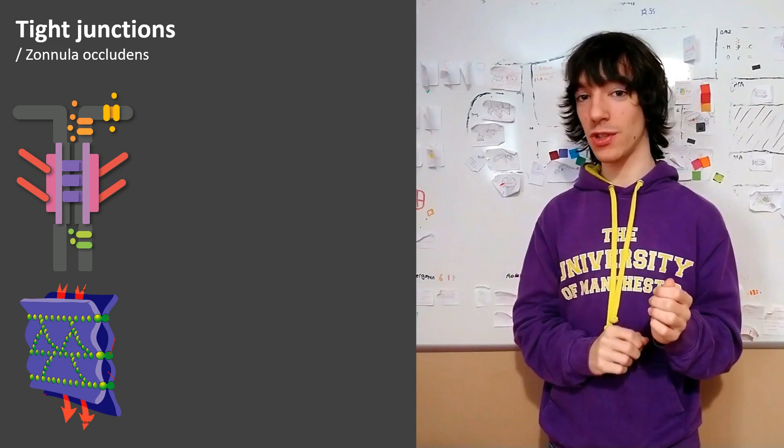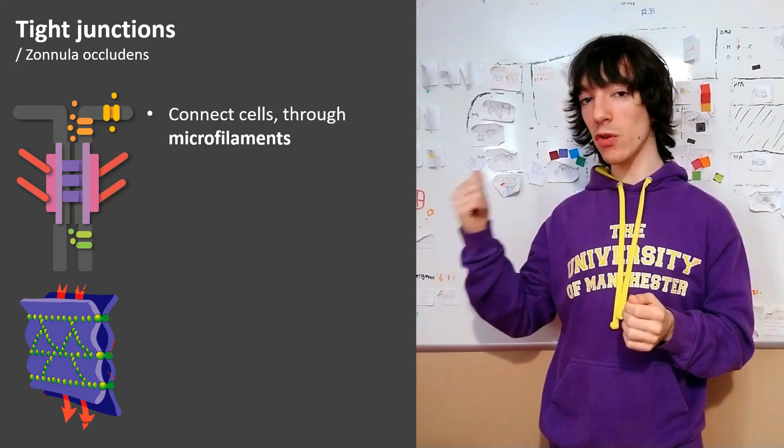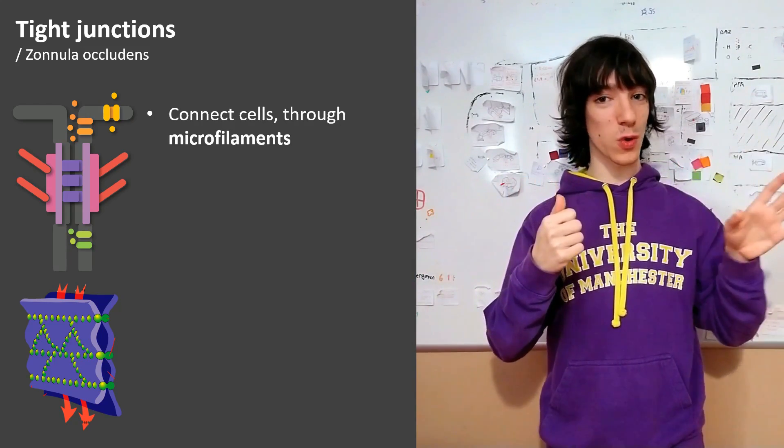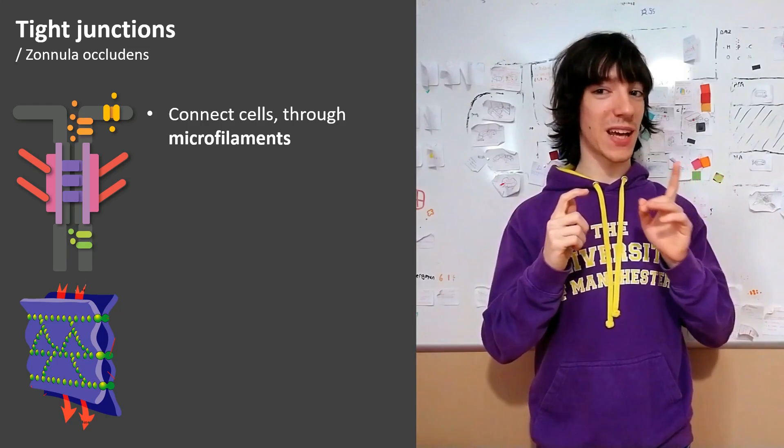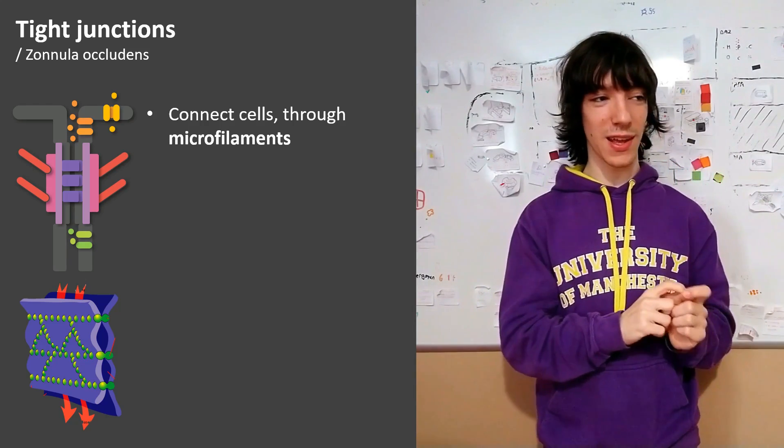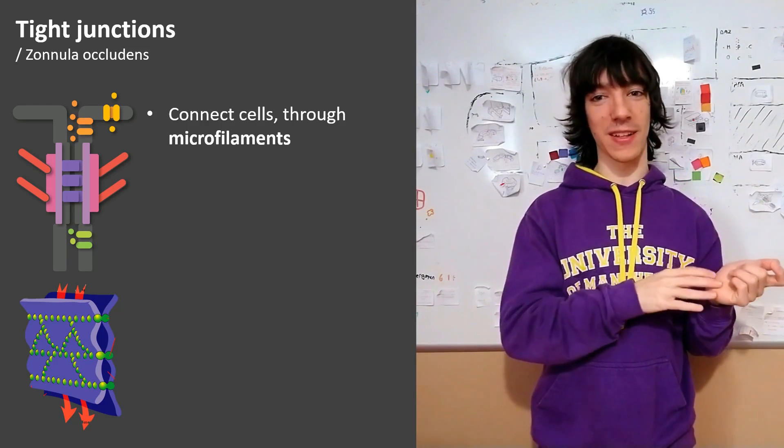In the case of tight junctions, they connect the microfilaments of one cell to those of the neighboring cells, but adherens junctions can also do that and they can do it sort of better than tight junctions.